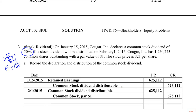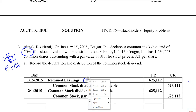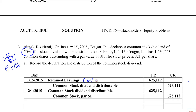Record the declaration. Since it's just par value, we ignore the market value, and the reduction in retained earnings is just the total par value, which is the stock dividend percent times the number of shares outstanding — 1,250,223 — times the par value of a dollar. And that's 625,112, rounded to the nearest dollar.